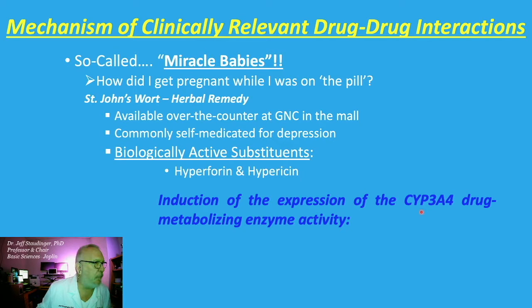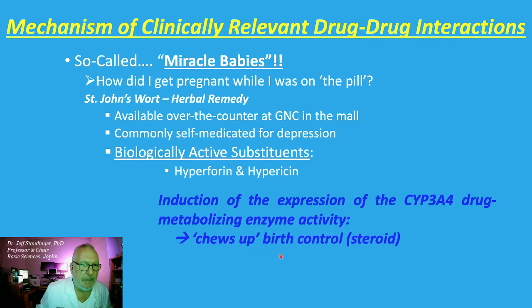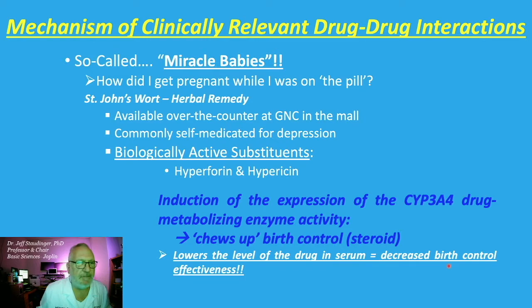Its biologically active substituents include two compounds, hyperforin and hypericin. These compounds are now known to have the effect of inducing the expression and activity of CYP3A4, a very important drug-metabolizing enzyme. This has the effect in your patients of chewing up their birth control — lowering the level of the drug in the serum, thereby decreasing the effectiveness of the medication.